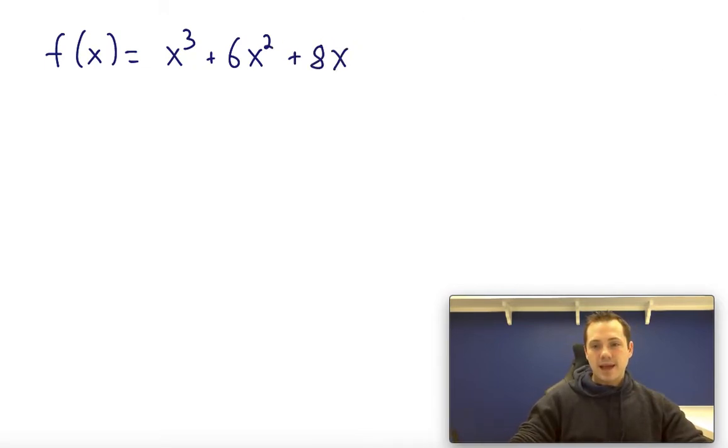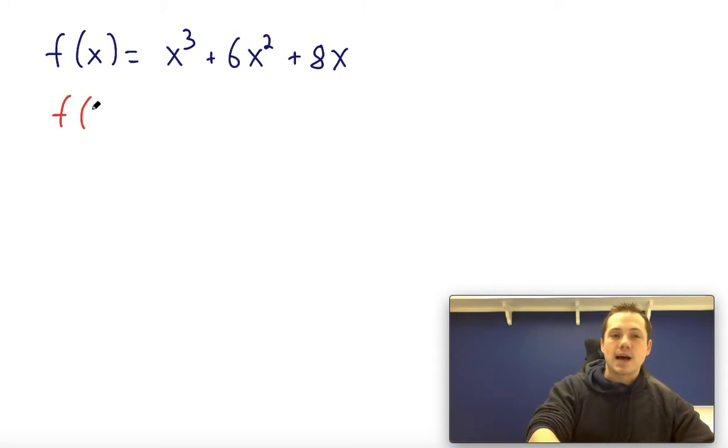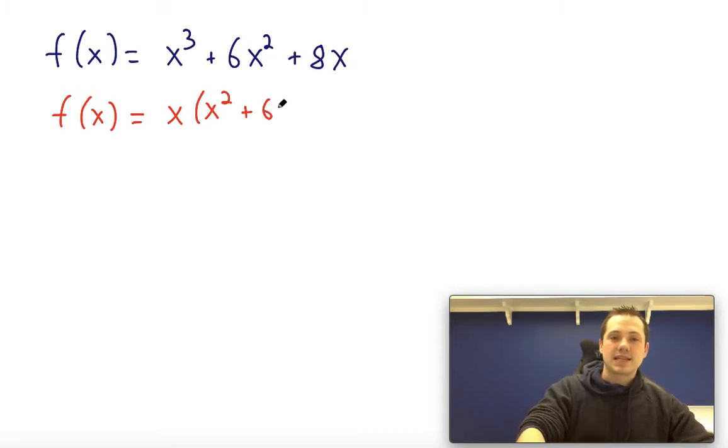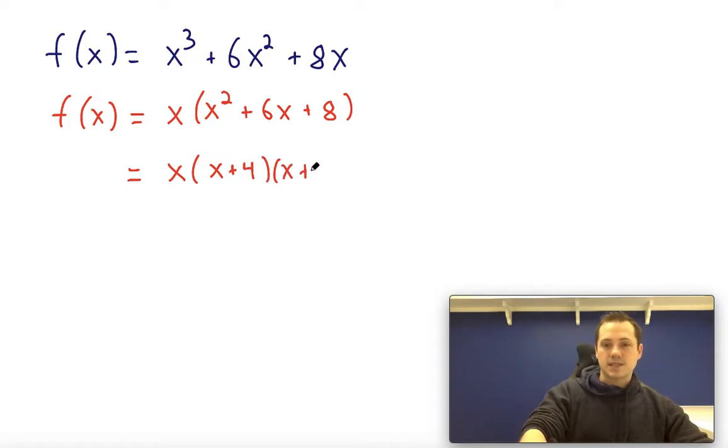Well, the first thing we have to do in order to solve this is factor it. We can start by factoring out the greatest common factor, which is just an x. We can take an x out of every term. And when we do that, we have x times x squared plus 6x plus 8. And we find that we can factor the second part into x plus 4 times x plus 2.